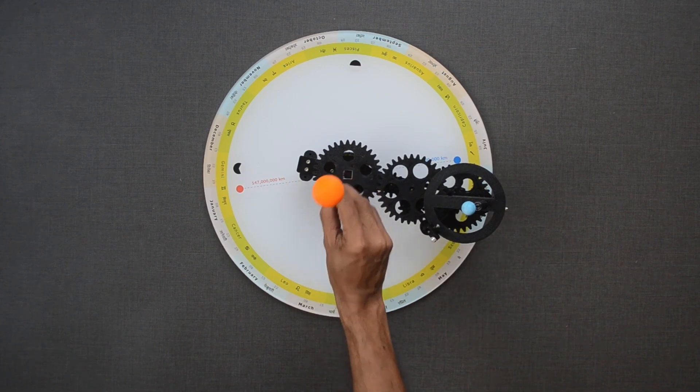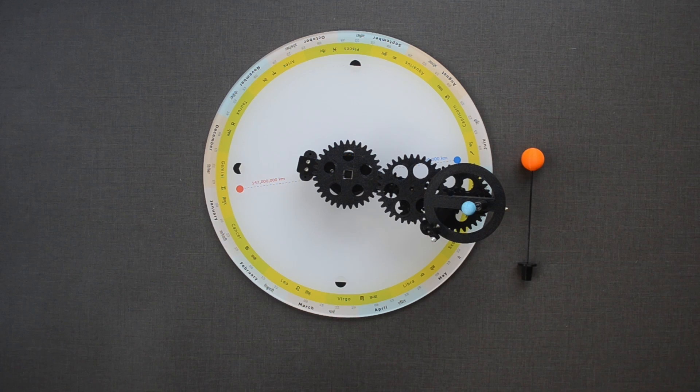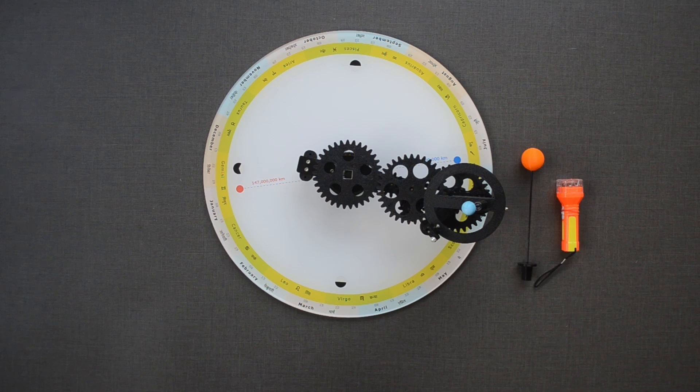Let's remove the Sun. Eclipses can be better understood with the help of available light sources. Small torch, laser, or flashlight from the smartphone can be used as our light sources.